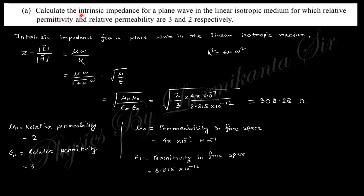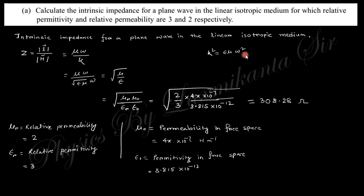The first question says: calculate the intrinsic impedance for a plane wave in a linear isotropic medium for which relative permittivity εr = 3 and relative permeability μr = 2. The formula for impedance is the magnitude of the electric field divided by the magnitude of the magnetic field, and by the Maxwell relation this ratio equals μω/k. Substituting k = √(εμ)·ω, you can easily find that the impedance equals √(μ/ε).